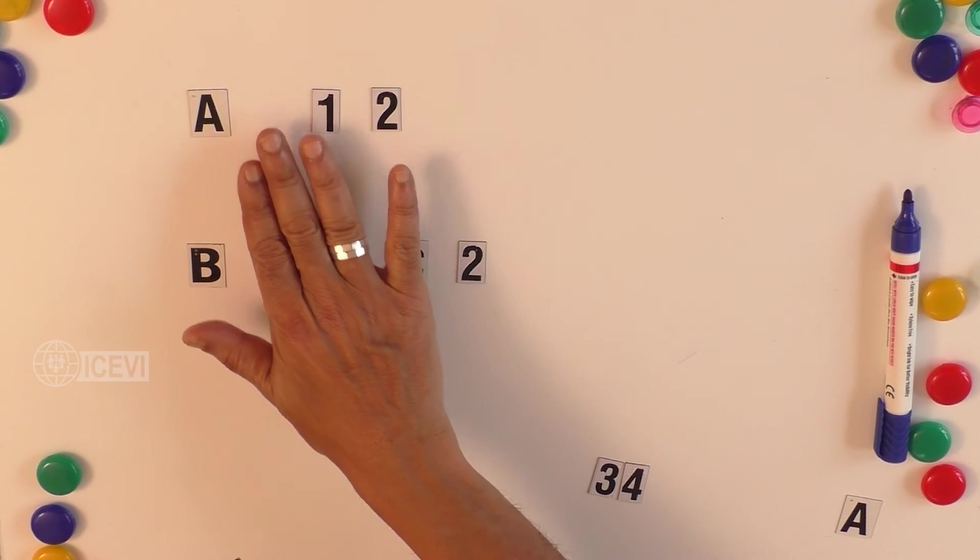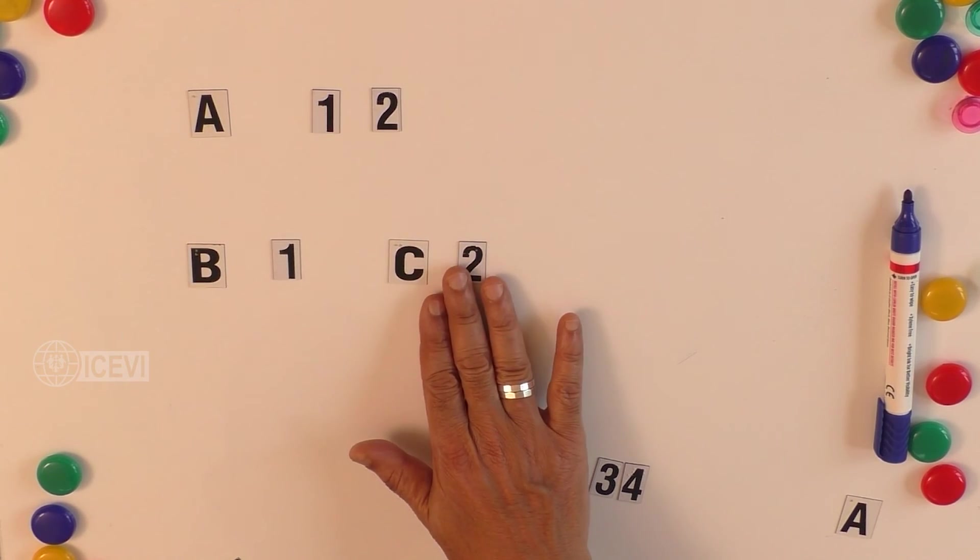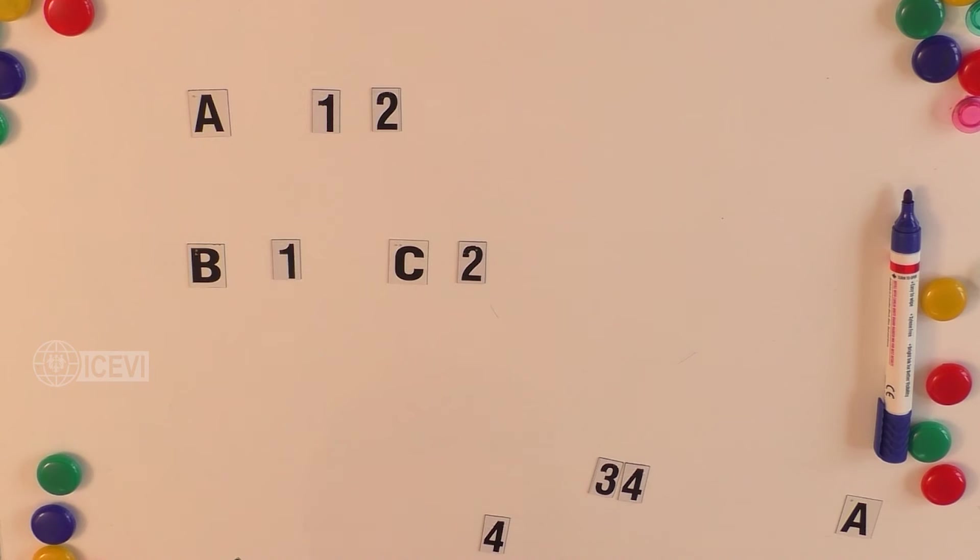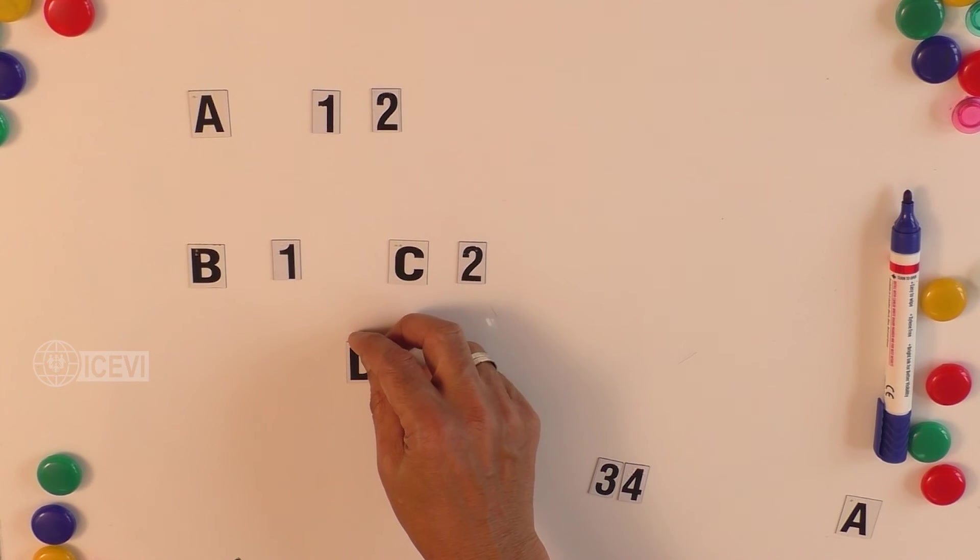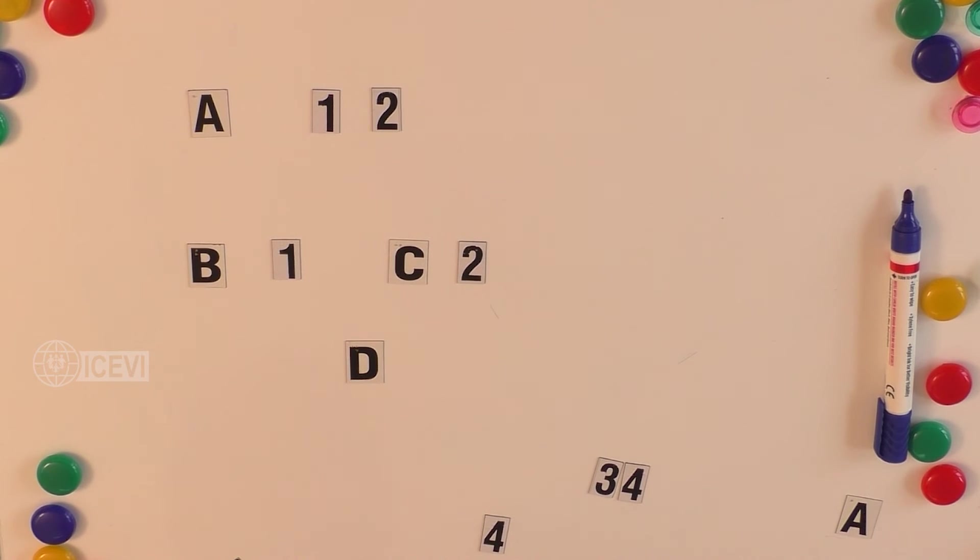Now B is a subset of A and C is also a subset of A. There is a possibility for one more set. What is that set? We call that the null set.